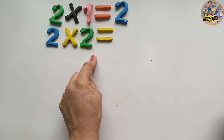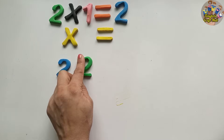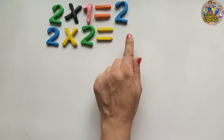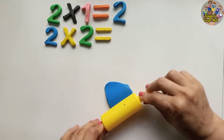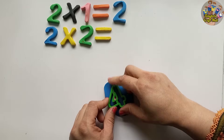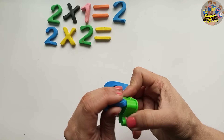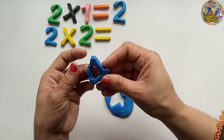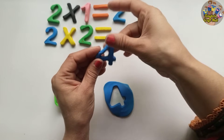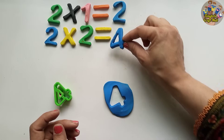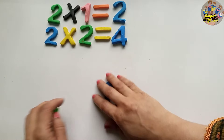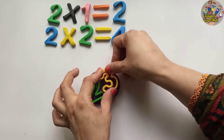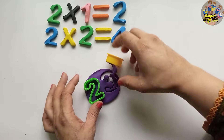Now it's two multiplied by two, which means two plus two. Do you know what the answer will be? We will add two and two. Two, three, four — two multiplied by two is equal to four! So two twos are four. This is the process of continuous addition, which you can also call multiplication. Now I am putting four as the answer — two plus two is equal to four.